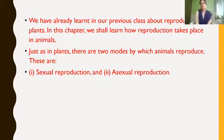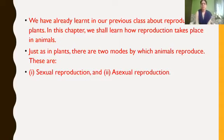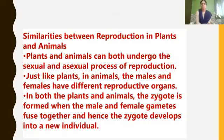As we have learnt reproduction in plants in our previous classes, in this chapter we shall learn how reproduction takes place in animals. Like in plants, there are two modes of reproduction. The same way in animals also, animals reproduce by two methods — namely sexual reproduction and asexual reproduction.